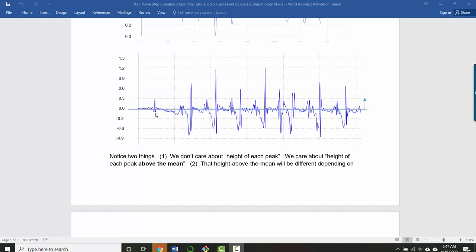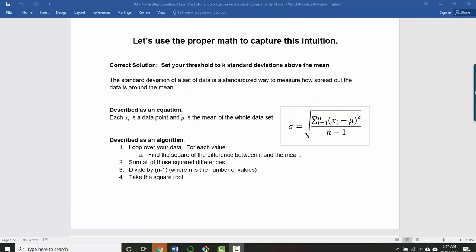So the second question is, how far above your mean should you make your threshold? And the answer is, it depends on how spread out your data is around that mean. Standard deviation is a standard statistic that you can use for measuring how spread out your data is around a mean.